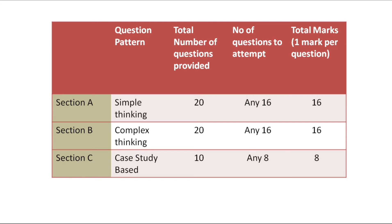Section B involves complex thinking — it is not as simple as Section A. Students need to apply concepts to solve the questions. Here, 20 questions will be given, students have to answer 16 questions, each carrying one mark. So Section B also carries 16 marks.